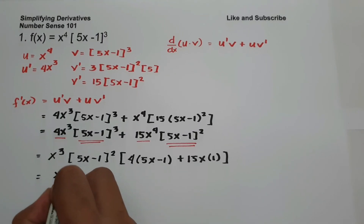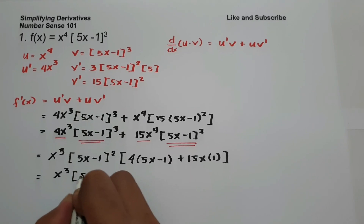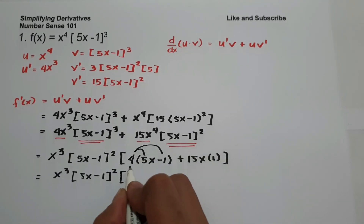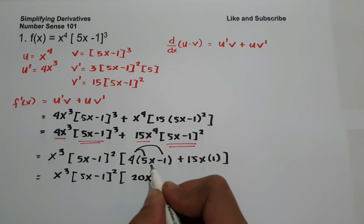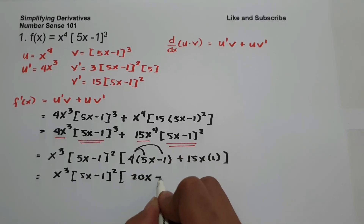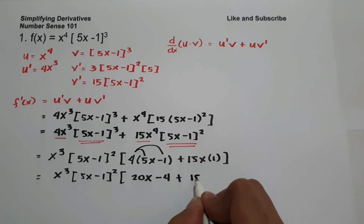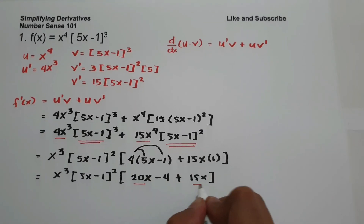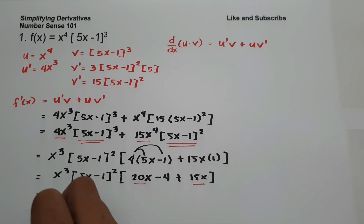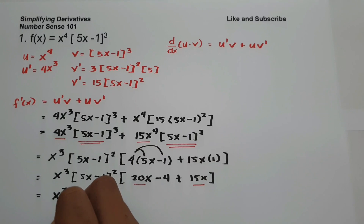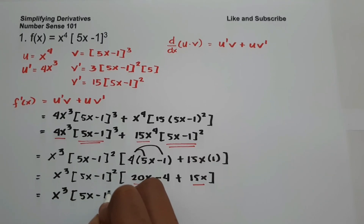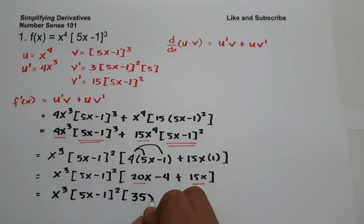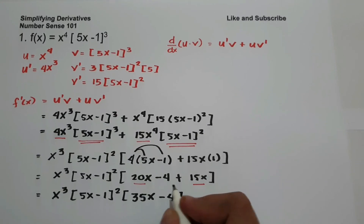So let us simplify. We have x³ times 5x minus 1 squared times: 4 times 5x is 20x, and 4 times negative 1 is negative 4, plus 15x. So let us combine like terms. We have x³ times 5x minus 1 squared multiplied by 20x plus 15x, that is 35x minus 4. This will be our answer.